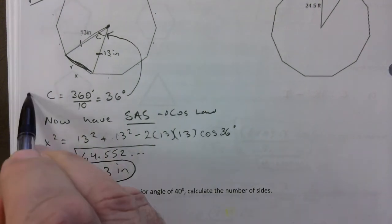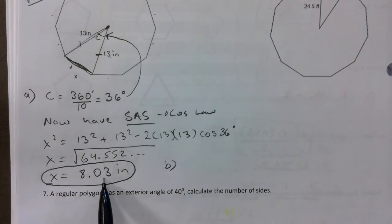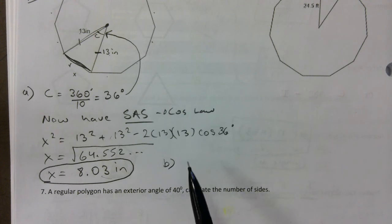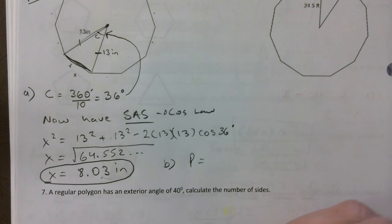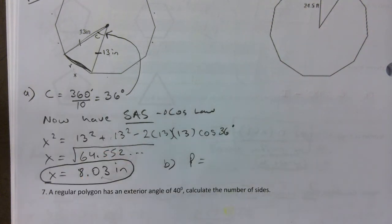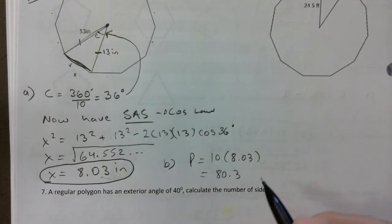That answer is part A. For part B, the perimeter: since it's a regular decagon with 10 equal sides each of length 8.03, the perimeter is 10 times 8.03 = 80.3 inches. If the question had only asked for the perimeter, you'd need to keep four decimal places in x before multiplying — that's the convention.